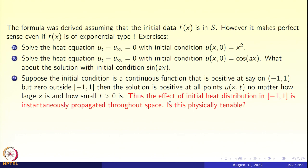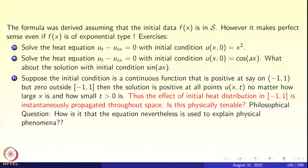How is this physically possible? This can be described by saying that the effect of the initial heat distribution is instantaneously propagated throughout space. Although this is not physically tenable, the heat equation is still a very good approximation to real physical phenomena, because when t is very small and x is large, u(x,t) obtained from the integral will be extremely small.